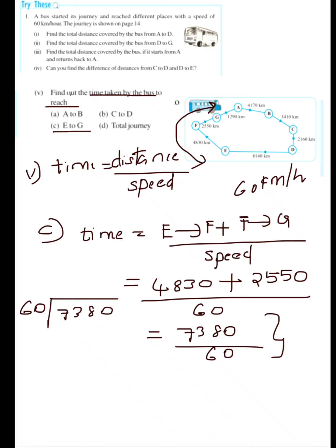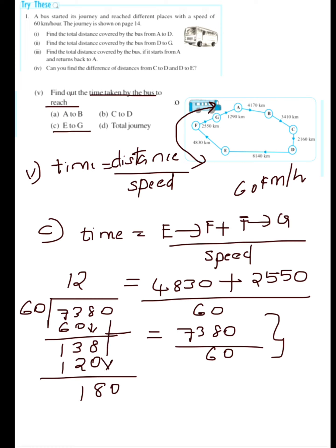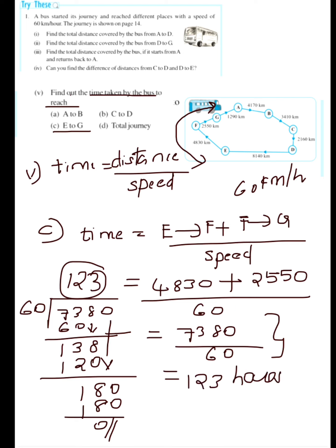Dividing 7380 by 60: 1, 60; 1, 3, 8; 2, 120; 8, 1; 180; 3, 180; 0 — the answer is 123. So the time taken by the bus to reach from E to G equals 123 hours.